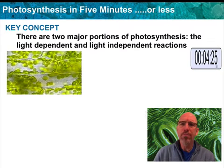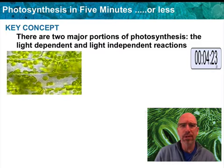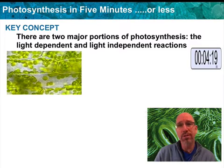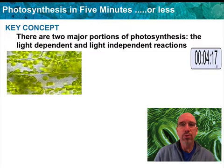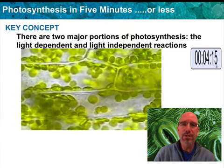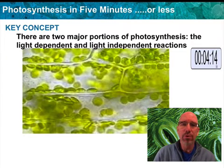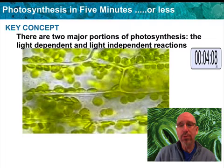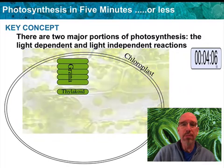So here are some plant cells. Those green things you see in there are chloroplasts — that's where photosynthesis happens. Those chloroplasts floating around inside the cells each contain the material, the pigments, the chemistry to do photosynthesis.